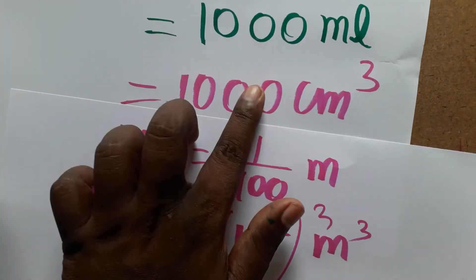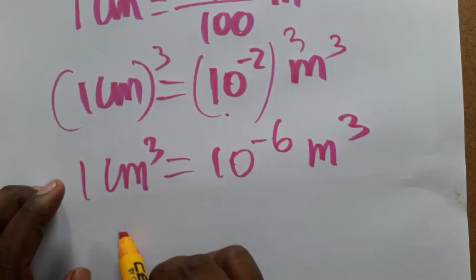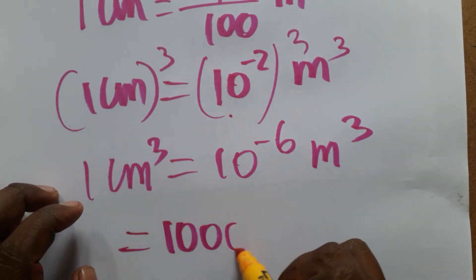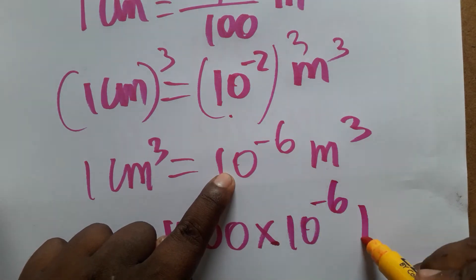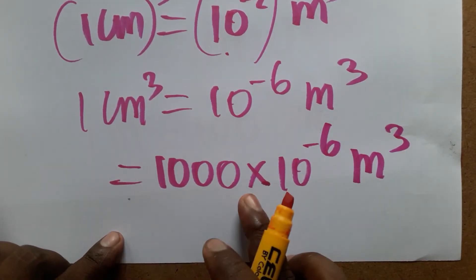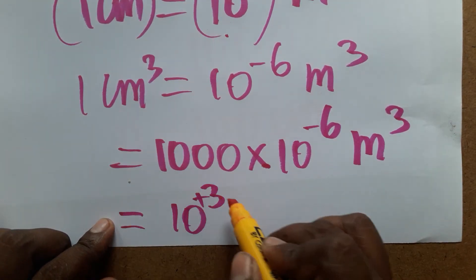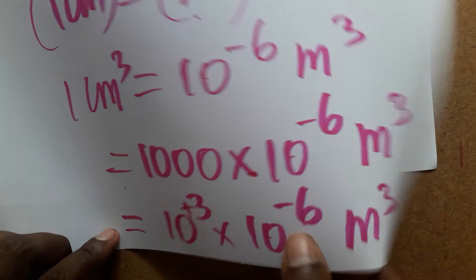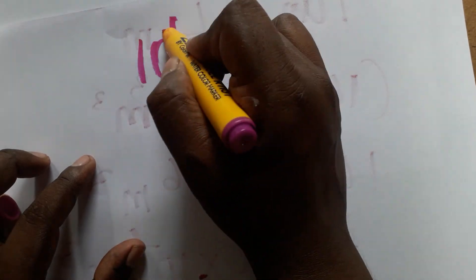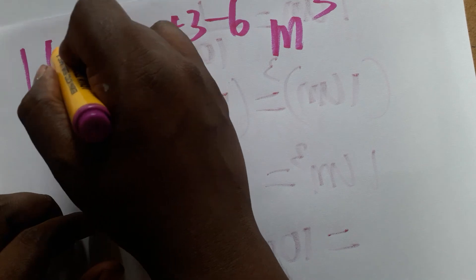We have one thousand centimeter cube, because one mL is one centimeter cube. So one thousand into 10 power minus 6 meter cube. One thousand is 10 power plus 3, so 10 power plus 3 into 10 power minus 6 gives us 10 power minus 3 meter cube. That is the value of one liter.